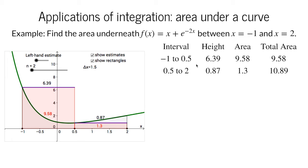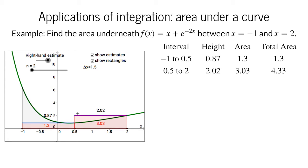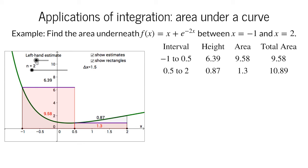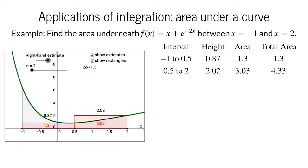We could do a similar calculation by approximating the height of the function in each subinterval by its height at the right of the interval, obtaining a right-handed estimate. In this case, the rectangle heights are 0.87 and 2.02. Their areas are 1.3 and 3.03 for a total area of 4.33. These two estimates of 10.89 for the left-handed estimate and 4.33 for the right-handed estimate are pretty far from each other and not too close to the actual area under the function.